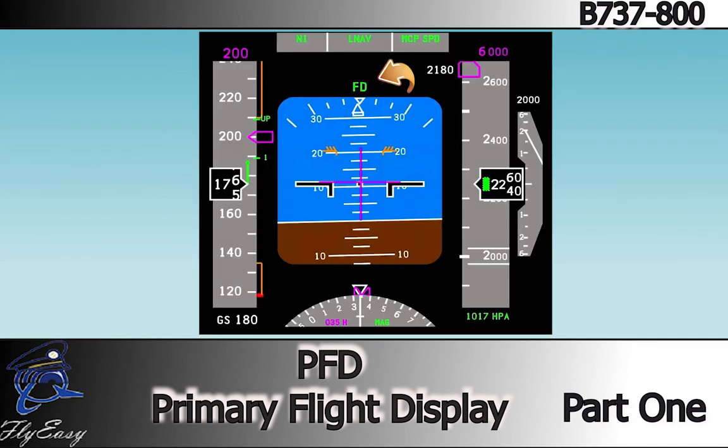The ASA field displays the current status of the AFDS just above the attitude display.